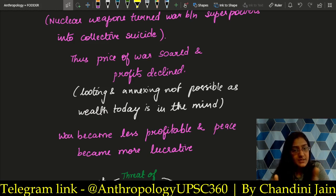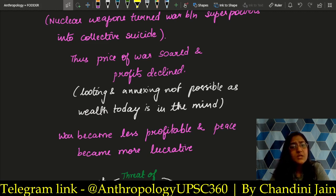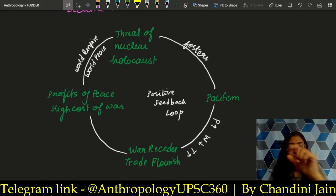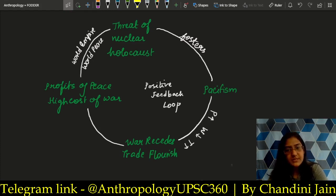One always positive thing about nuclear weapons: it is the one superpower that withheld collective suicide. If atomic bombs had not been invented, we would still be going to war. But because of this destructive power, wars have stopped — both parties fear that if they fight, it will be collective suicide. That is why it is said that people like Robert Oppenheimer, the architect of the atomic bomb, deserve the Nobel Peace Prize. War when it recedes, trade flourishes and peace increases — because war costs are becoming more and it is more profitable to be peaceful.